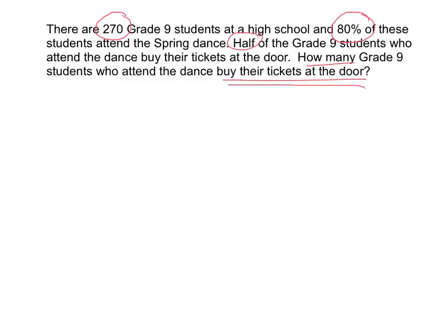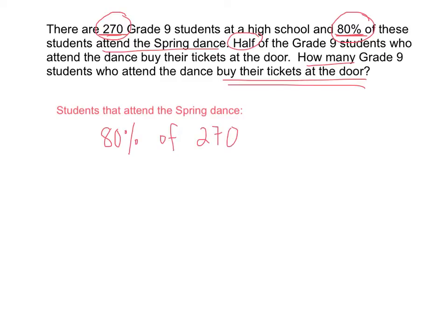So let's start by figuring out how many students actually did attend this dance. All together there are 270 students at the school, and 80% of these attend the dance. So 80% of 270 students attended this dance, but we need to figure out what that number is — how many students attended the dance. I'm going to show you one way of solving this, but of course there are many different ways we could solve this problem.